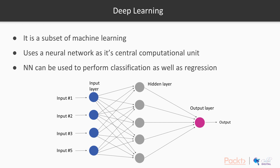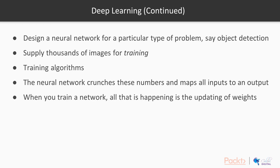A neural net can only do this accurately if it has already been trained on that task before. So if the task at hand is to detect an object, we would supply hundreds of images of that object for training. There are many training algorithms which can be used to update the neural network weights — the most famous being backpropagation and gradient descent. These algorithms update the neural network's weights during training such that it maps the input training features to the expected outputs.